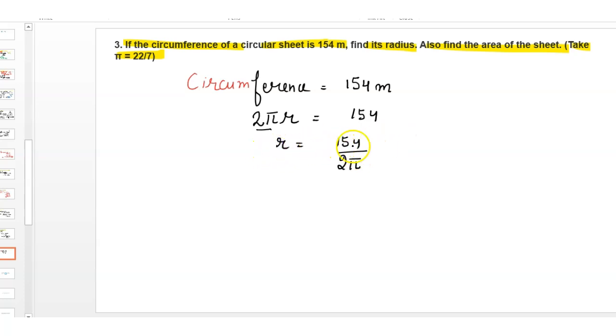So radius is equal to 154 upon 2π. 2 times 77 is 154, and 2 times 7 is 14. This equals 77 divided by π.